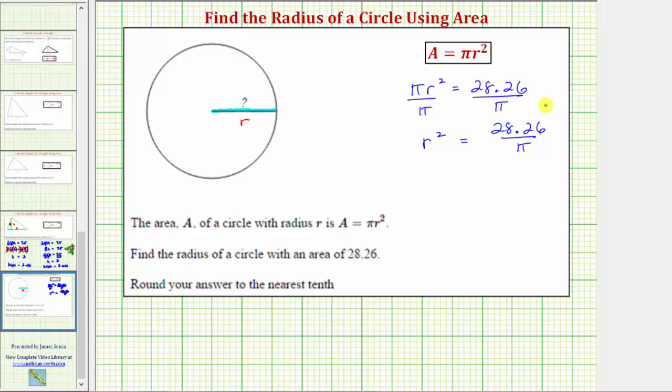Now remember our goal here is to solve for r, not r squared. And therefore, to solve for r, we need to undo the squaring by taking the square root of both sides of the equation or raising both sides of the equation to the one-half power. Let's take the square root of both sides of the equation.